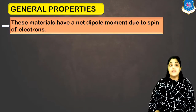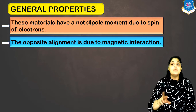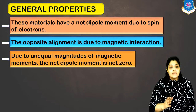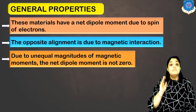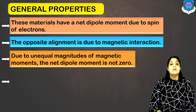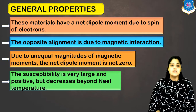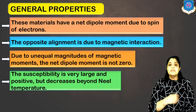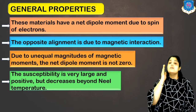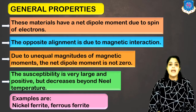General properties of ferrimagnetic materials — also known as ferrites: they have a net dipole moment due to spin of electrons. The opposite alignment is due to magnetic interaction between adjacent dipoles. Due to unequal magnitudes of the magnetic moments, net dipole moment is not zero because they do not cancel out completely. The value of susceptibility is very large and positive, but susceptibility can decrease beyond the Néel temperature, as dipoles get randomly oriented at high temperatures, reducing magnetization and hence susceptibility. Examples: nickel ferrite and ferrous ferrite.